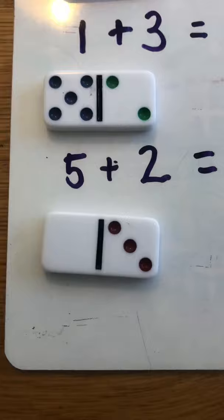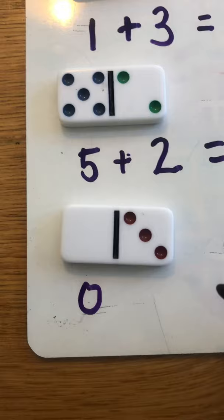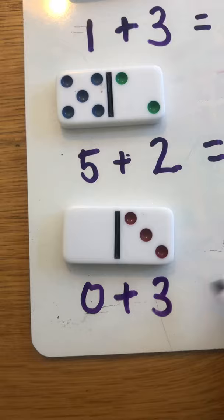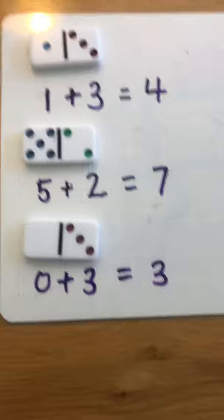Next up on this side of the domino I have zero dots. Don't forget that zero is a number. And on the other side I have one two three dots. All together that makes zero one two three, three. And there are my number sentences.